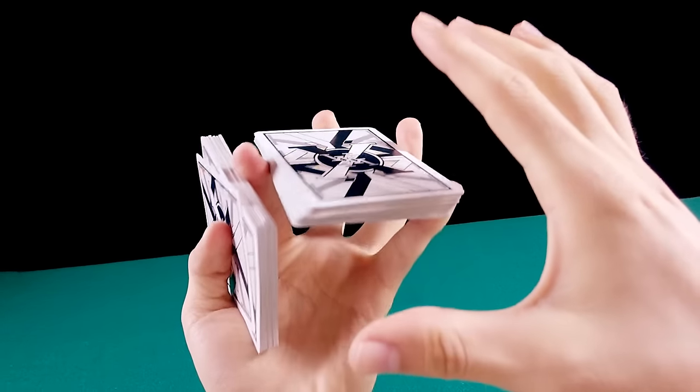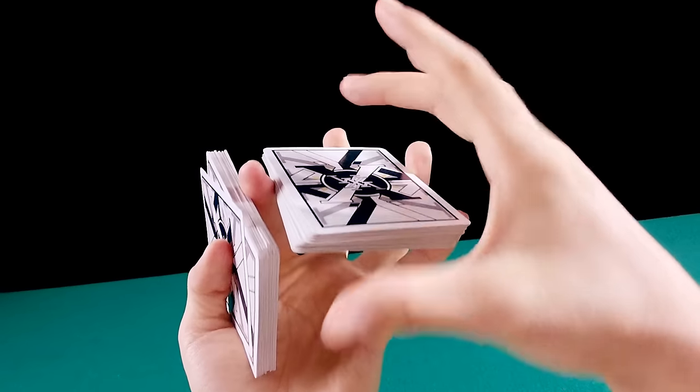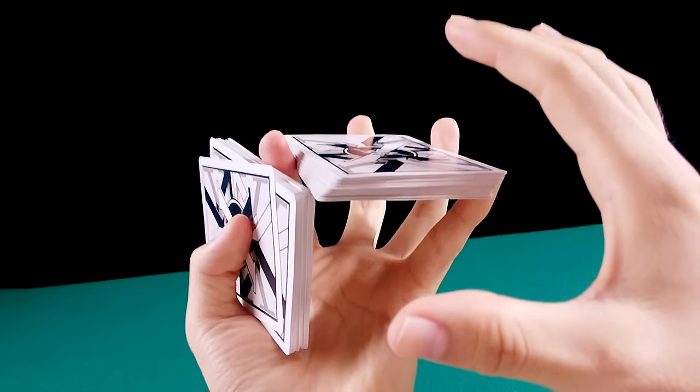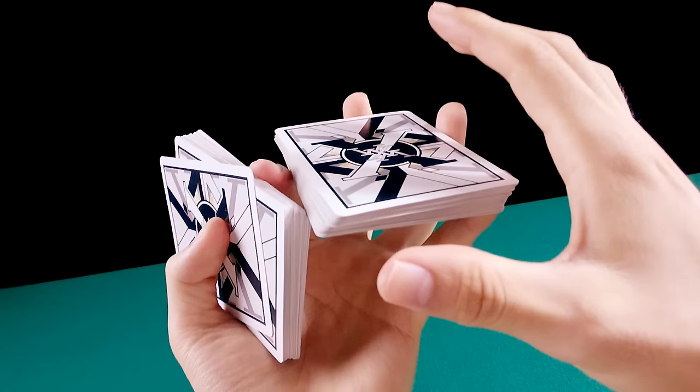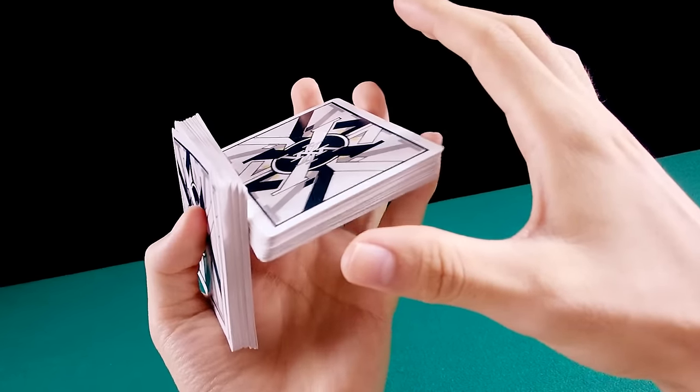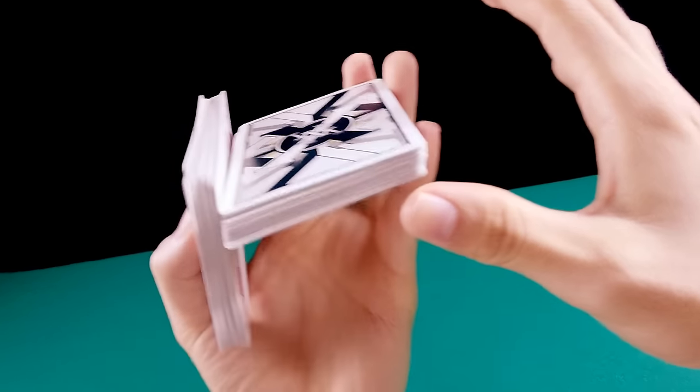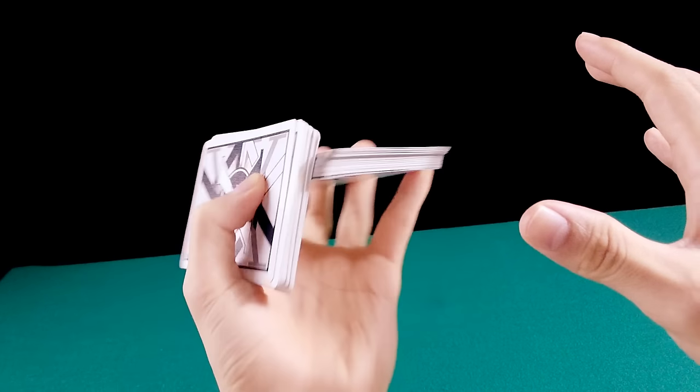E o dedo mínimo vai ficar aqui de suporte. Quando você for concluir o giro, o dedo indicador vai descer. Você desce e junta os dois montes. Assim, você vai encostar os dois montes desse jeito.